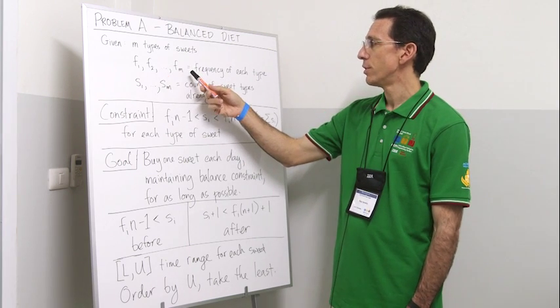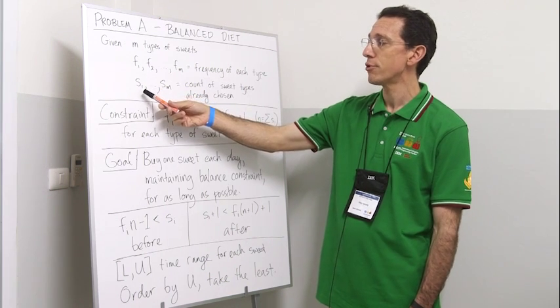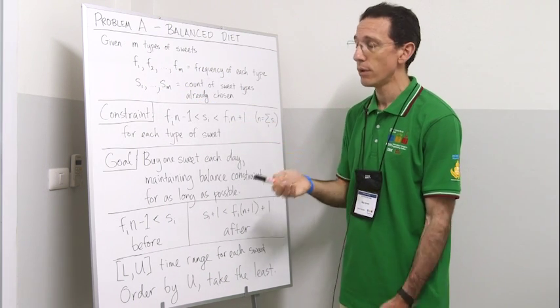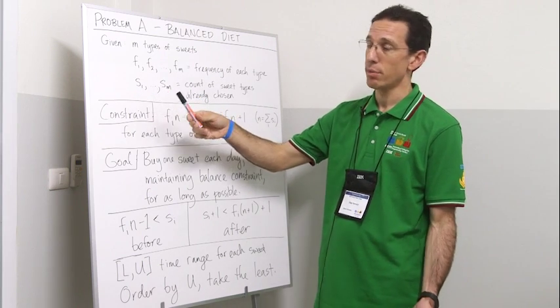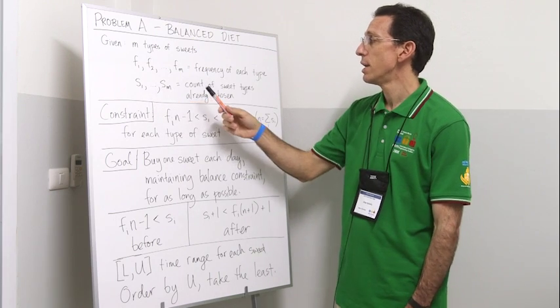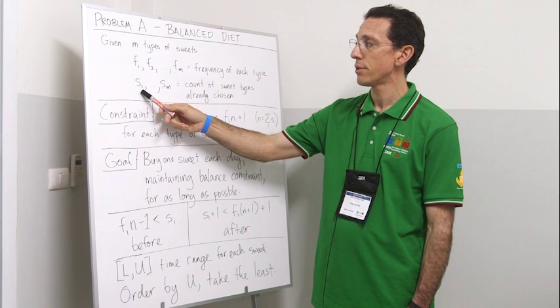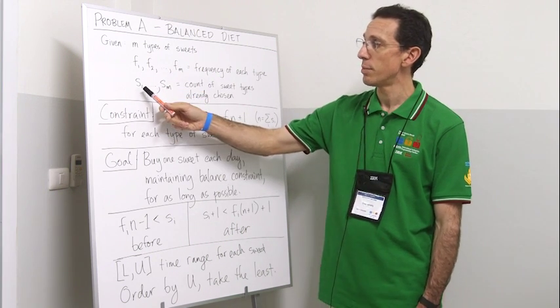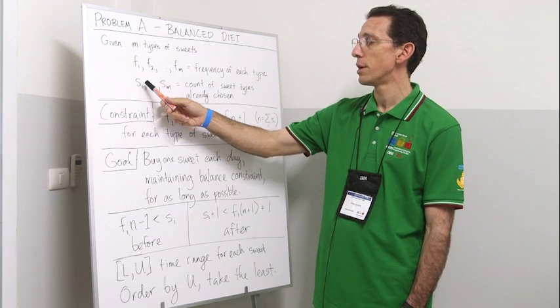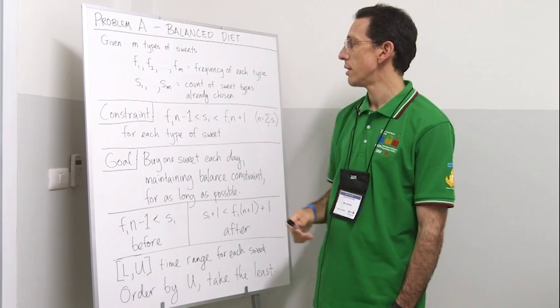Along with these desired frequencies, there's also a history of sweets that he has already eaten. We don't have to know the whole history, but what we do want to keep track of is for each type of sweet, the number of that sweet that he has already eaten. For type one, we keep a sum of the number of sweet one types that he has already eaten, and so on.